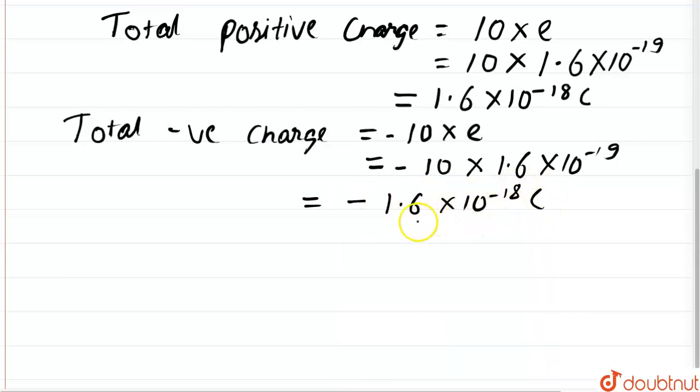So the magnitude of the total charge is same, but the sign is opposite. The total positive charge is 1.6 into 10 to the power minus 18 coulomb, and total negative charge is minus 1.6 into 10 to the power minus 18 coulomb.